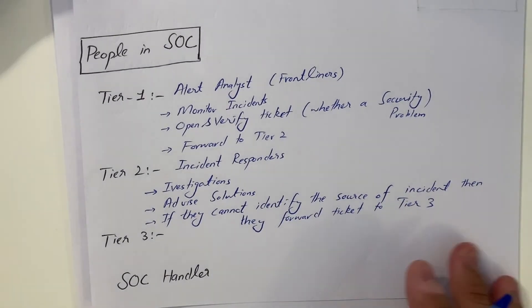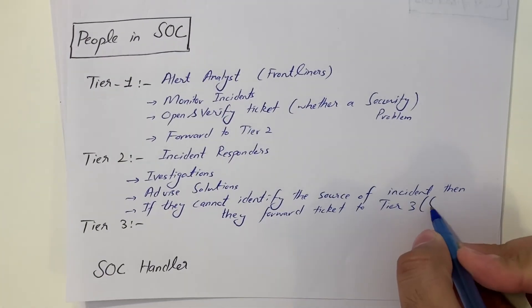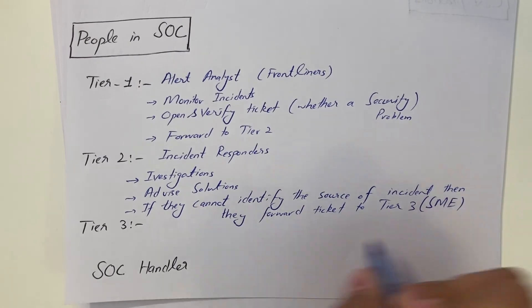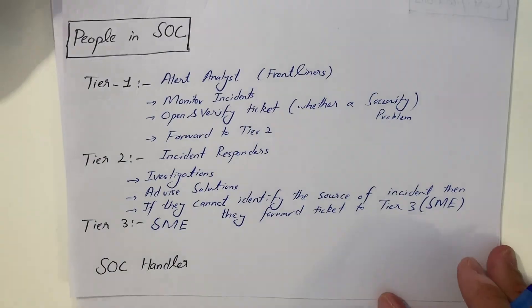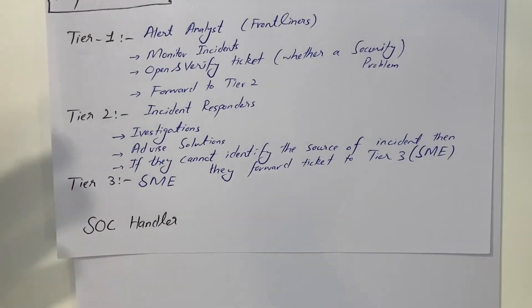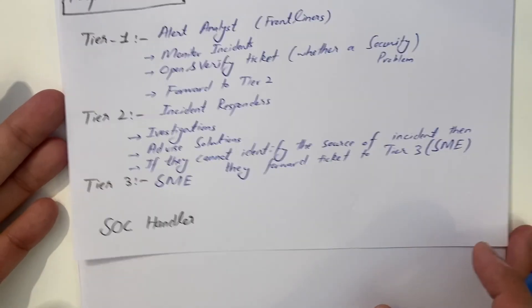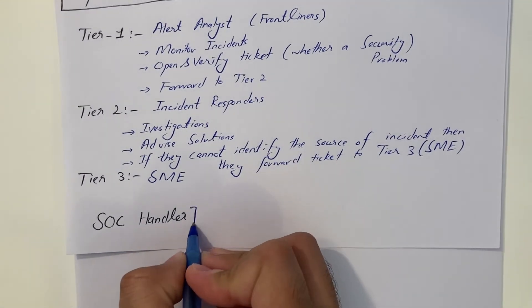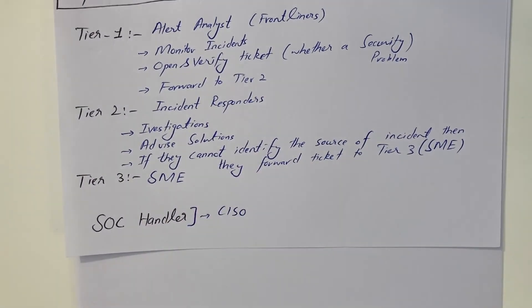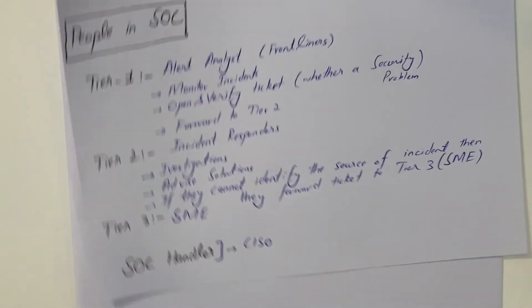Tier 3 is basically SME, Subject Matter Expert. Subject Matter Experts are more experienced people having 5 to 10 years experience. SOC handler or some people call it CISO, Chief Information Security Officer. They manage the overall projects, overall day-to-day stuff and other security projects as well.